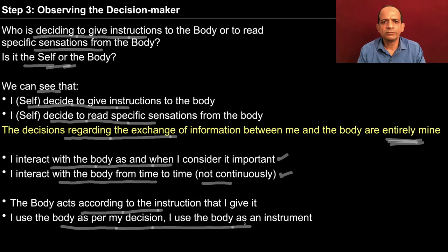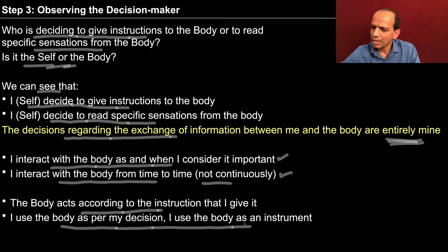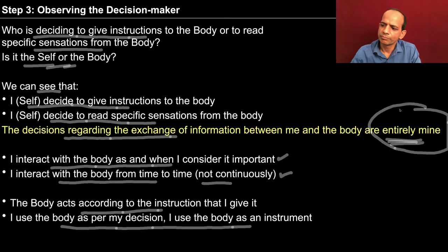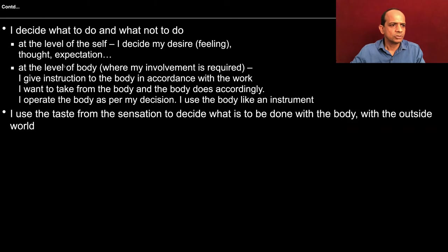The difference between self and body becomes more clear here. We have said that self is central to human existence and the body is an instrument. This gets further reinforced when you observe that you are deciding every time whether to send instruction to the body or to receive sensation from the body. You are the decision maker and your decisions are entirely yours — and that is how you are central to your existence.